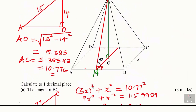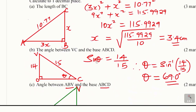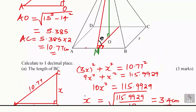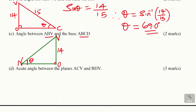VO is 14. BC is 3.4, so ON is half of 3.4, which is 1.7. Using trigonometric ratios, tangent of angle theta equals opposite over adjacent, which is 14 divided by 1.7.